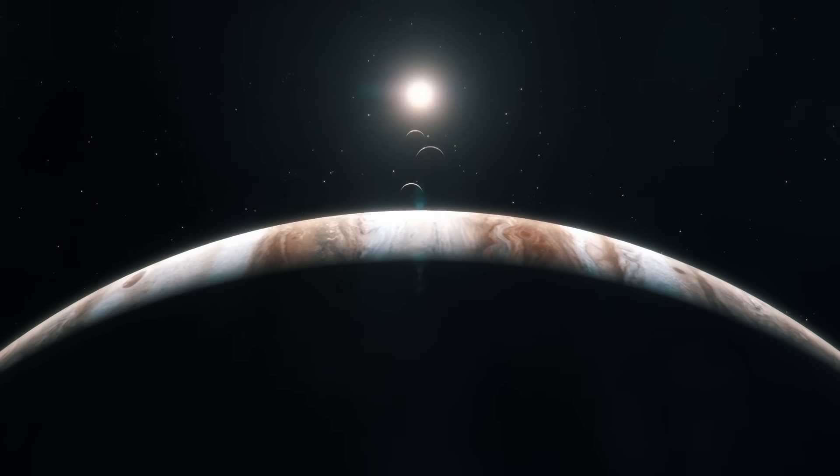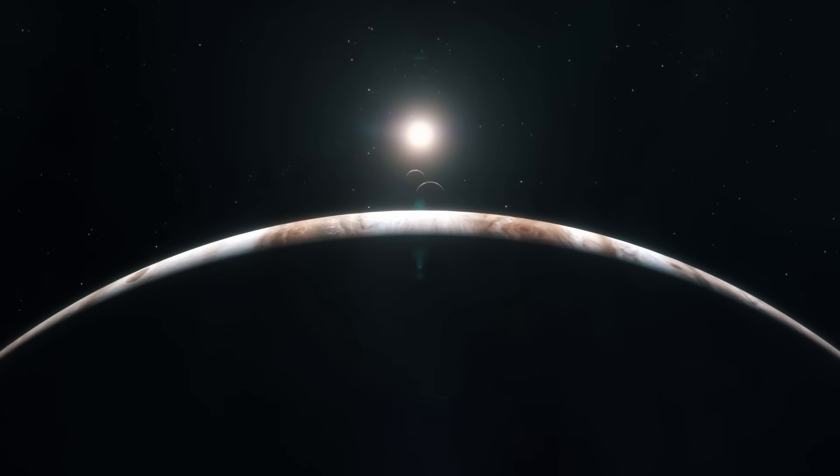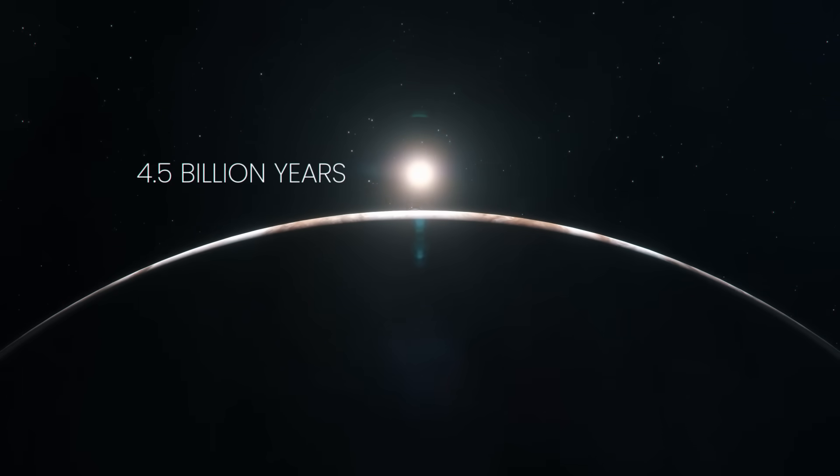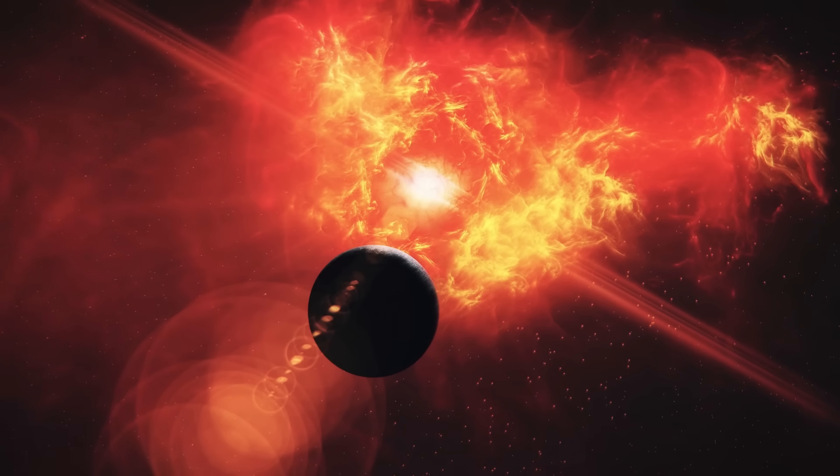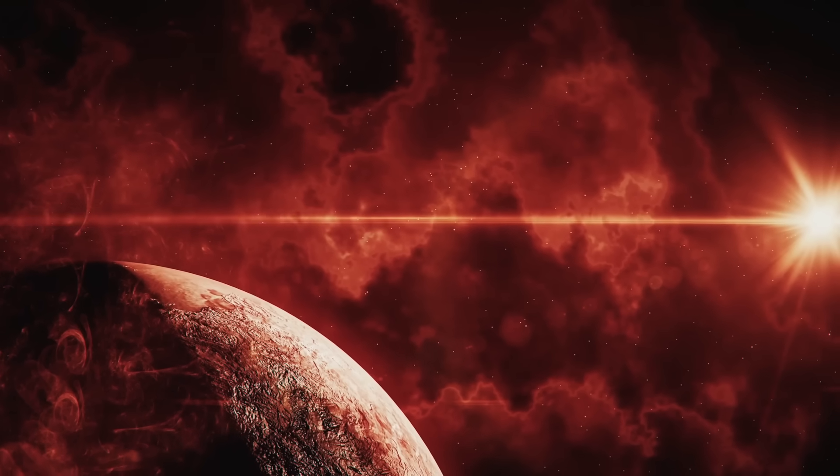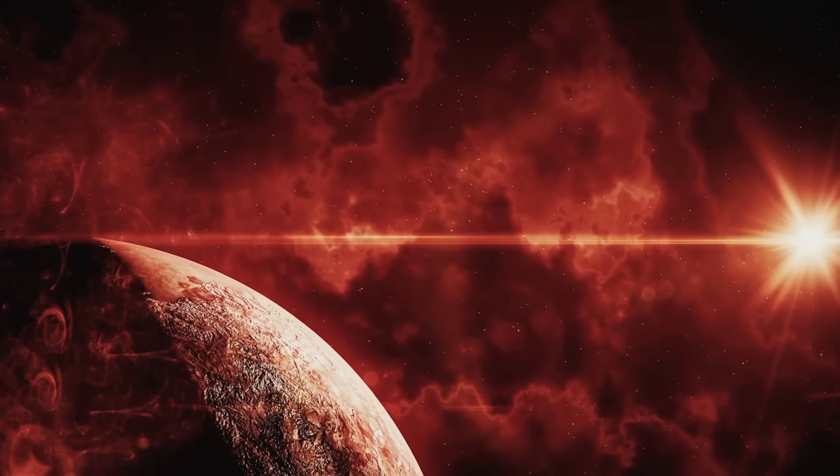Our own sun, a yellow dwarf, has had a stable existence for over 4.5 billion years. But this is not always the case for different stars in other systems. But we'll talk more about different types of stars in a moment.